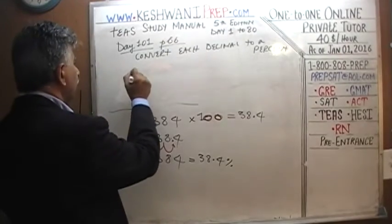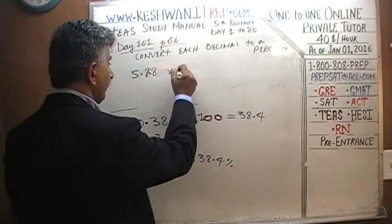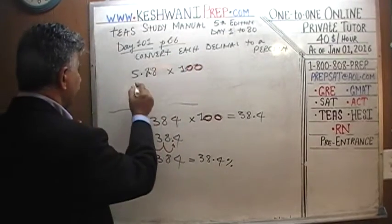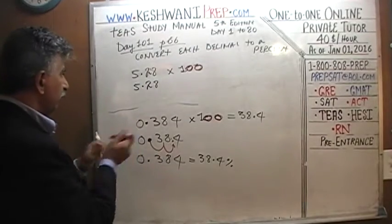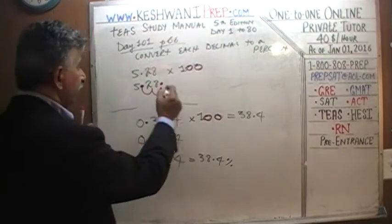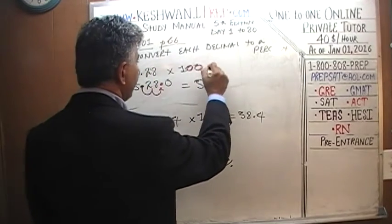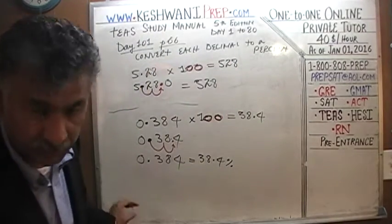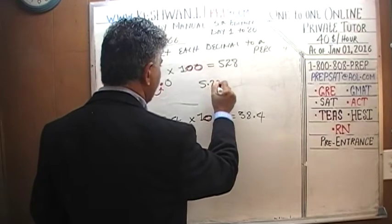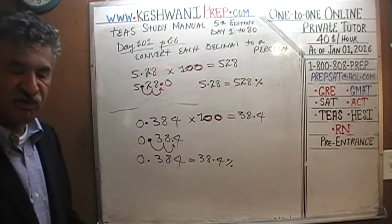How about 5.28? To convert to percentage, multiply by 100. Since 100 has two zeros, we pick up the decimal in 5.28 and move it two spots to the right: one, two — it ends up after the 8. You can put a zero there if you like. So 5.28 times 100 is 528, meaning 5.28 as a percentage is 528 percent.